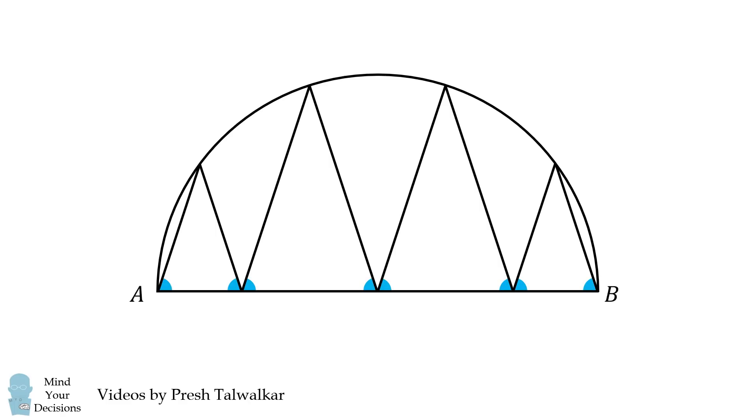Each of the angles between the zigzag line and the diameter has the same measure alpha. The question is what is alpha equal to?